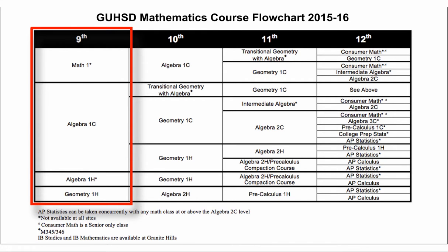In 9th grade, students can enter at a variety of points based on their completion of their 8th grade Common Core math-aligned sequence, whether it's Math 1, Algebra 1c, Algebra 1 Honors, or Geometry 1 Honors.